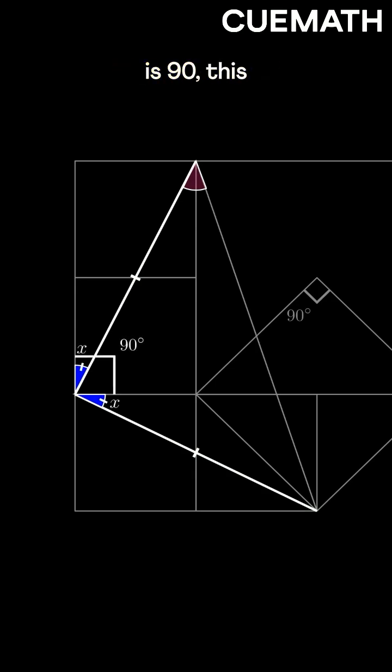Since this total is 90, this one must be 90 minus x. Now adding these two angles gives 90, forming a right-angled isosceles triangle.